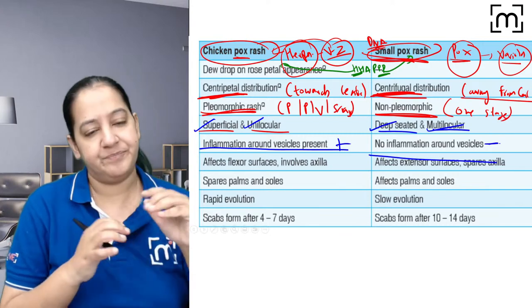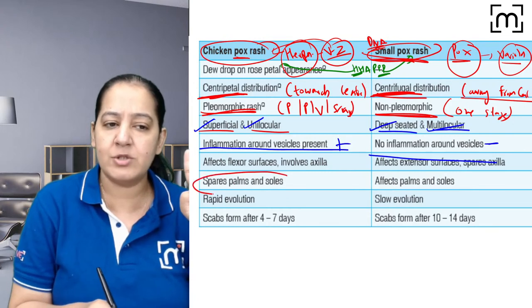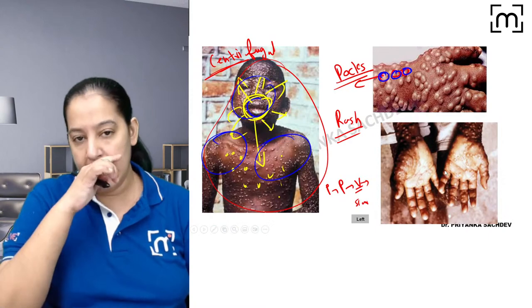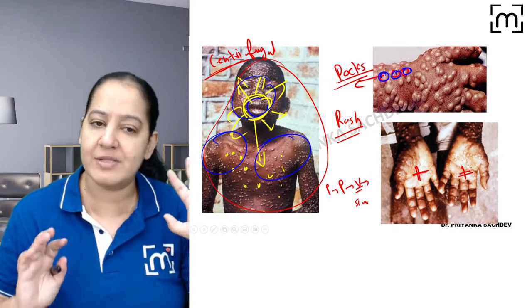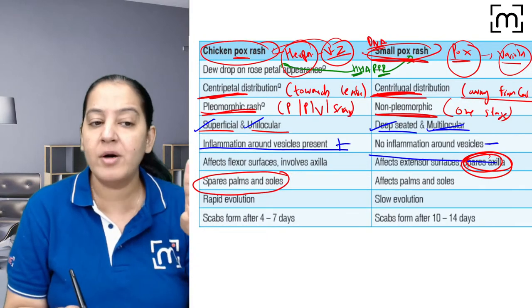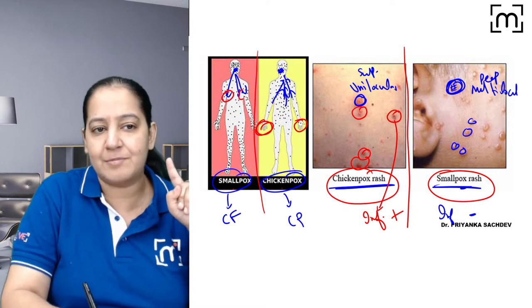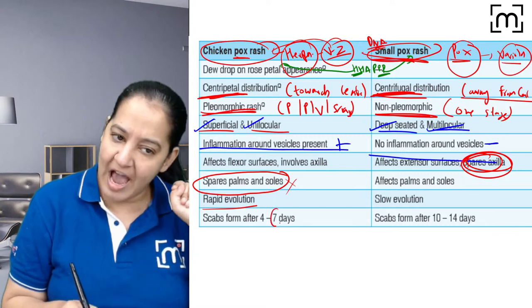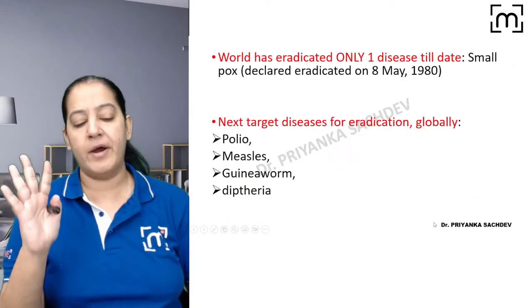In chickenpox, palms and soles are always spared — the rash never occurs there. In smallpox, the axilla is always spared. In the smallpox diagram you can see rash on the palms, confirming it is not chickenpox. Regarding time course: chickenpox has rapid evolution — scab forms within 7 days. Smallpox scab forms within 14 days.